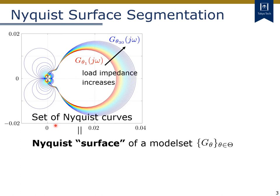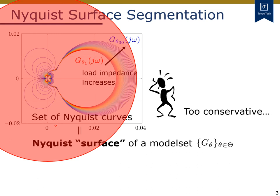One possible way is to cover the Nyquist surface by a big disk. The radius of this big disk corresponds to the worst-case gain considering the variation of all load parameters. However, it is clear that such an expression is too conservative, as you can easily imagine from this figure. Also, please note that these power system models are not positively real, because they are not confined into the right half-plane.